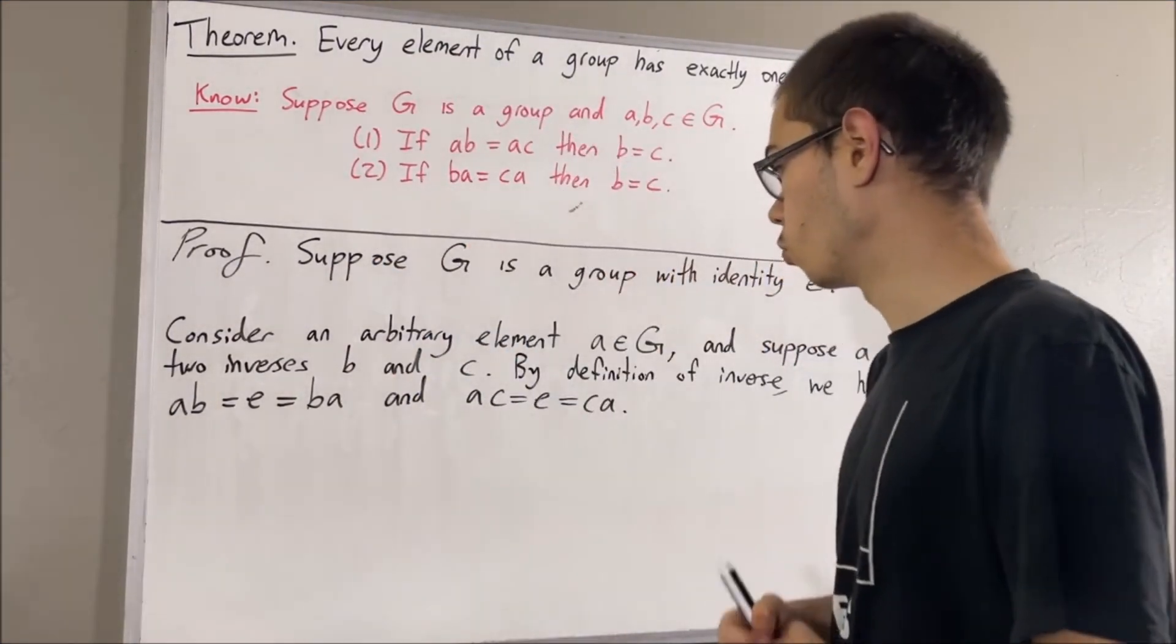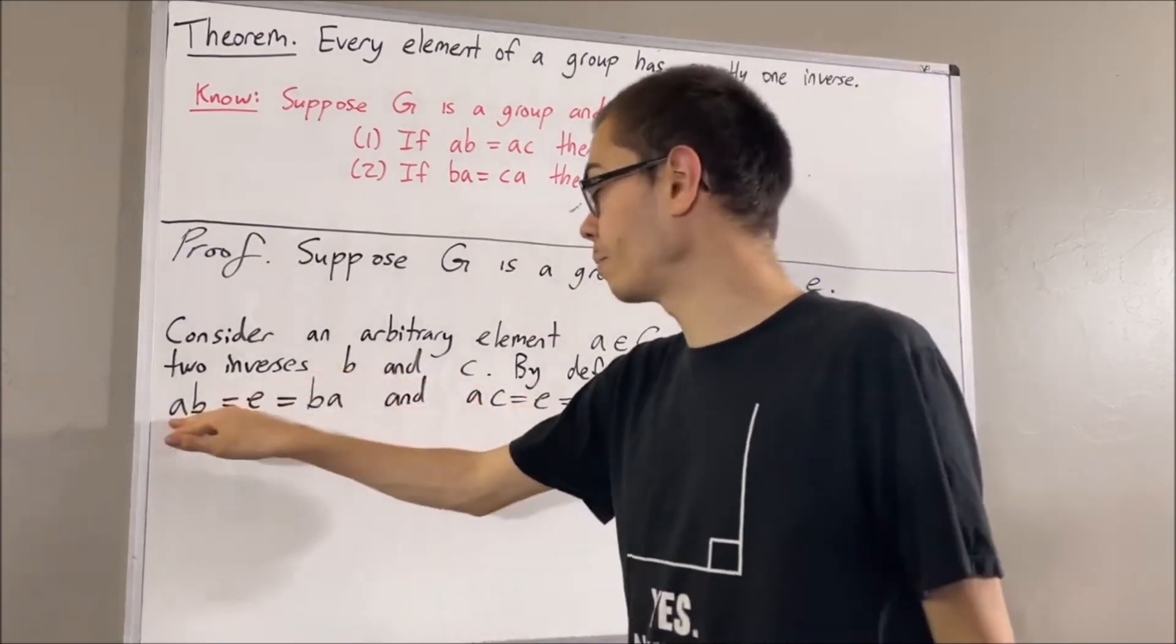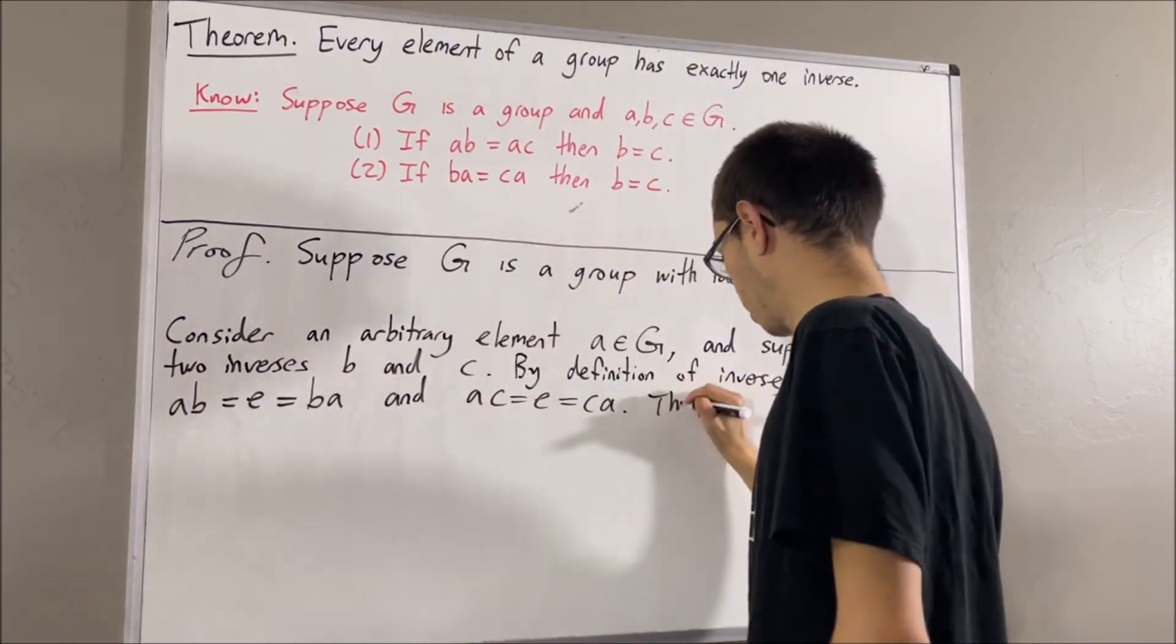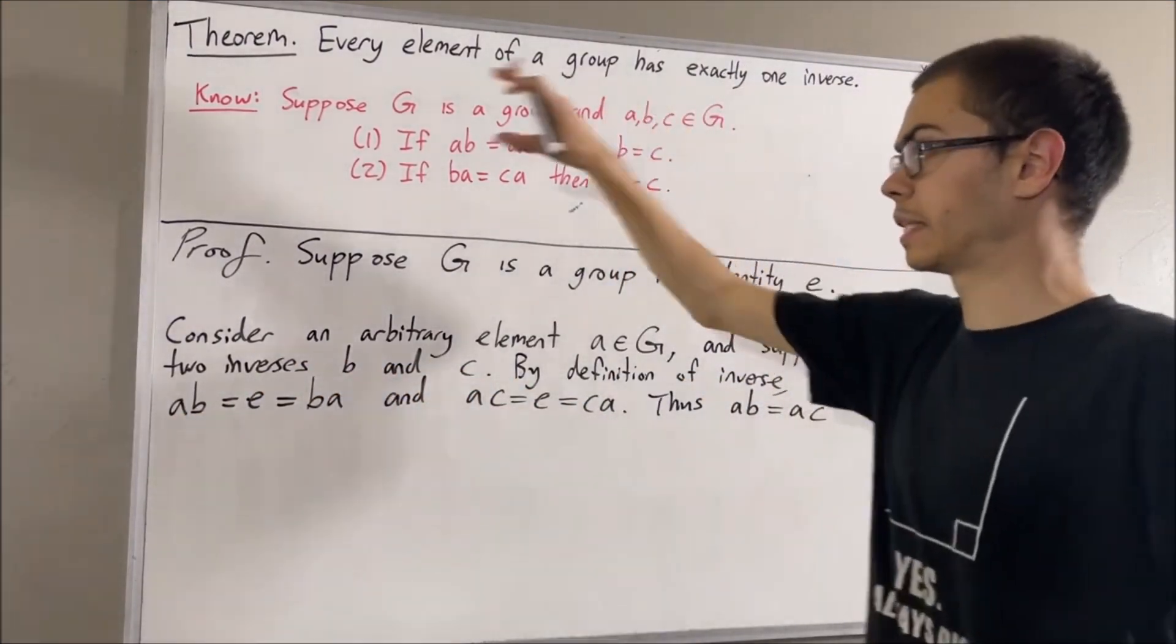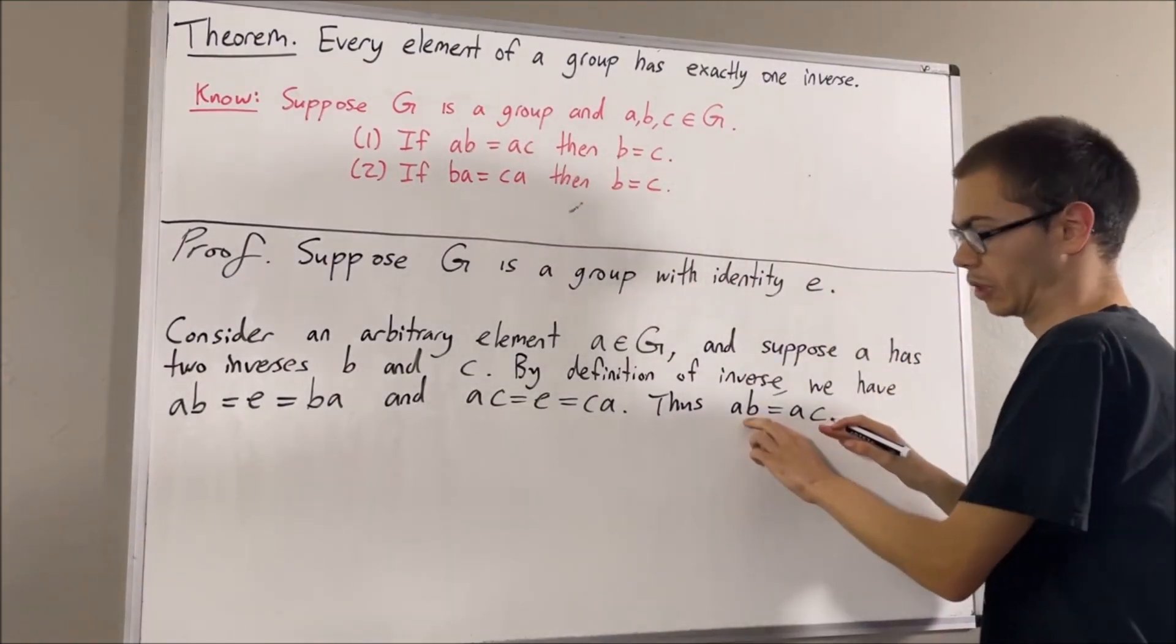And so we see that ab equals e, which equals ac. Therefore, ab equals ac. And by the cancellation law, this implies that b equals c.